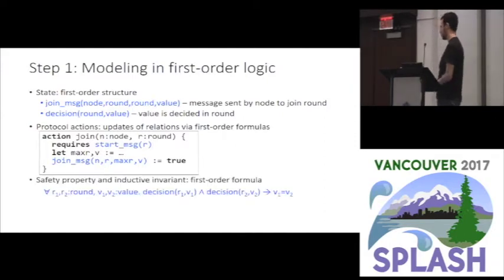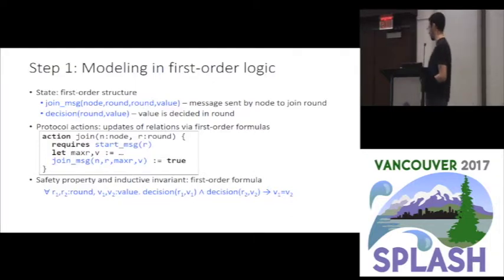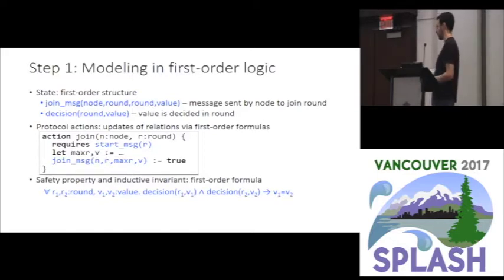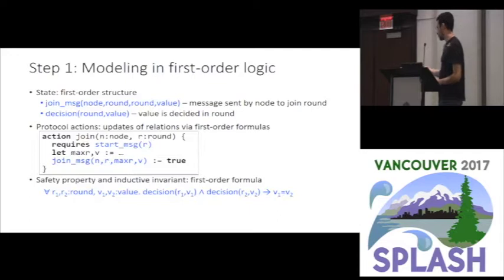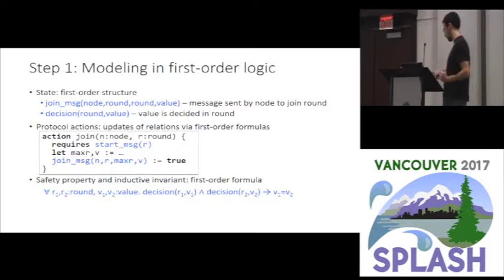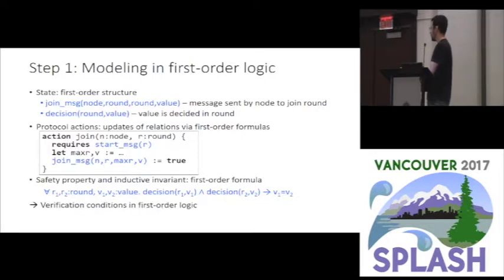Next you have to verify your protocol by expressing your safety properties. For example, the consistency of decisions — that every two decisions agree on the value being decided. You express your safety property as a first-order formula. You also have to express your inductive invariant in first-order logic. An important point is that we use quantifiers to quantify over nodes, rounds, and values, and all of these quantifiers are unbounded. We're interested in verifying these protocols for an unbounded number of nodes, messages, and values. After you do all of this, you can get verification conditions in first-order logic.